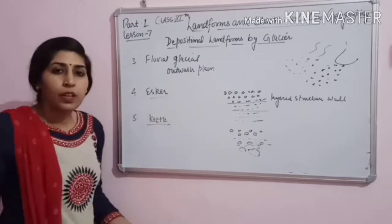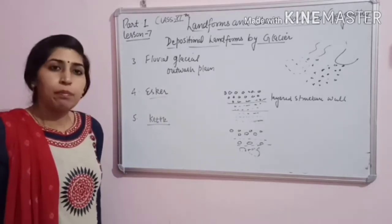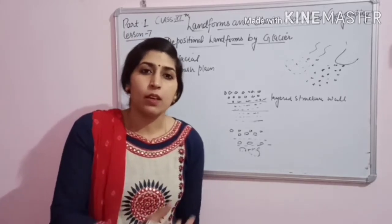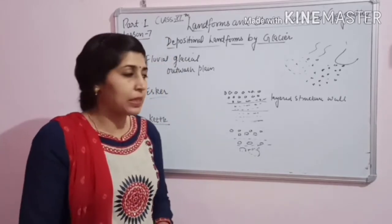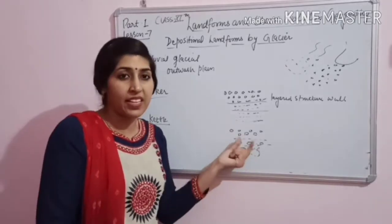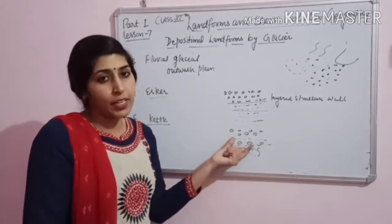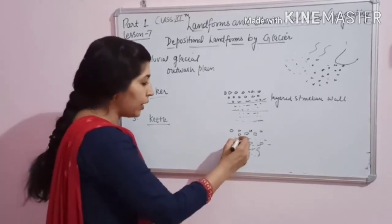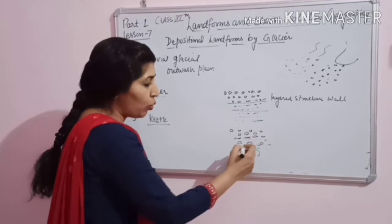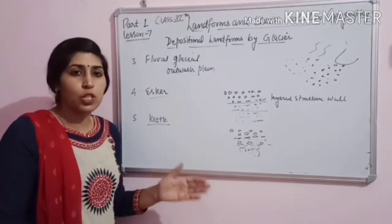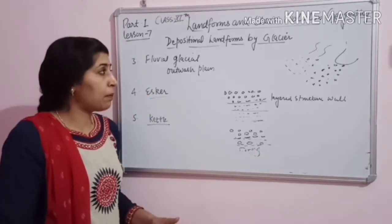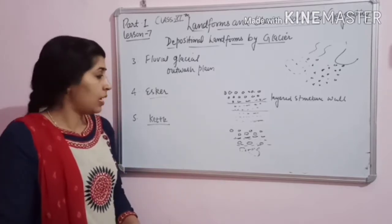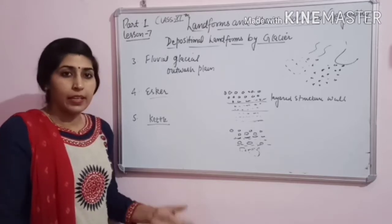Next is kettle. Kettles are kettle-shaped. When the sediment is in the side of the glacier, some ice pieces are deposited alongside sediments. When those ice pieces melt, there are small gaps — depressions — created. These are called kettles. So, these are some depositional landforms made by the glacier: moraines, fluvioglacial, esker, and kettle.